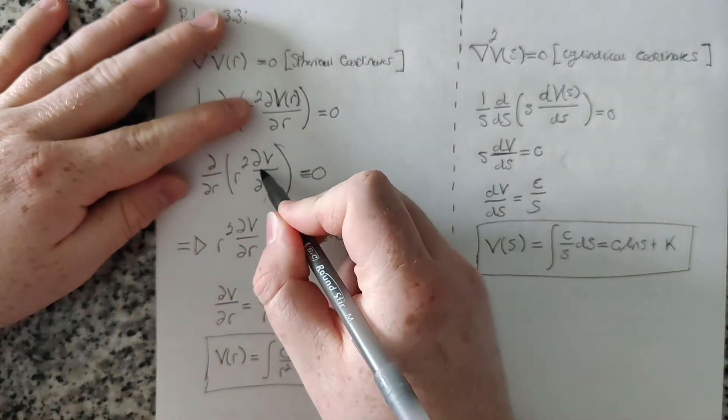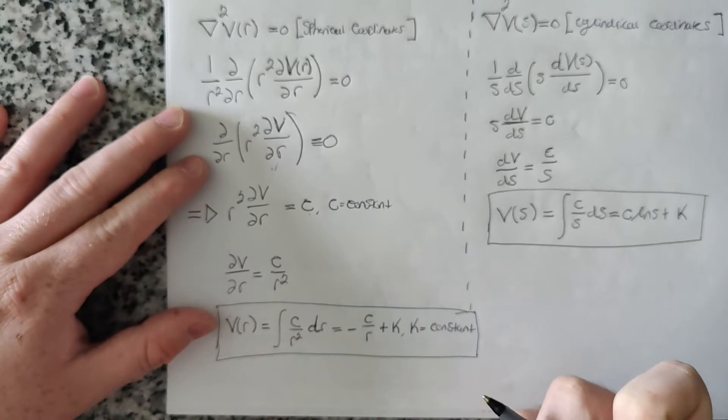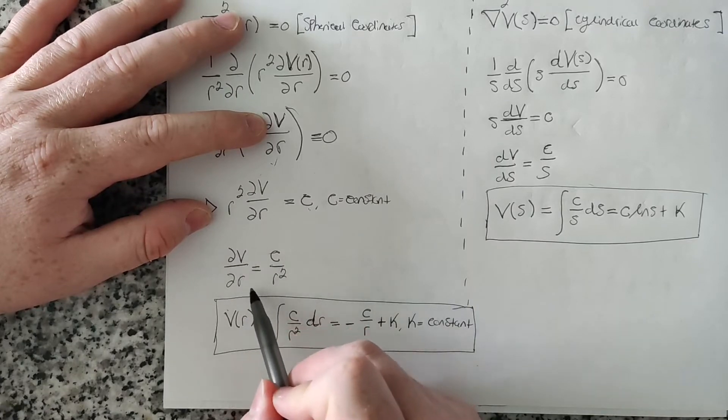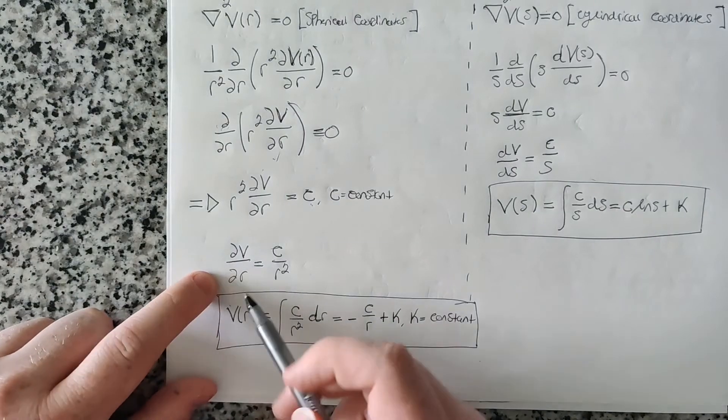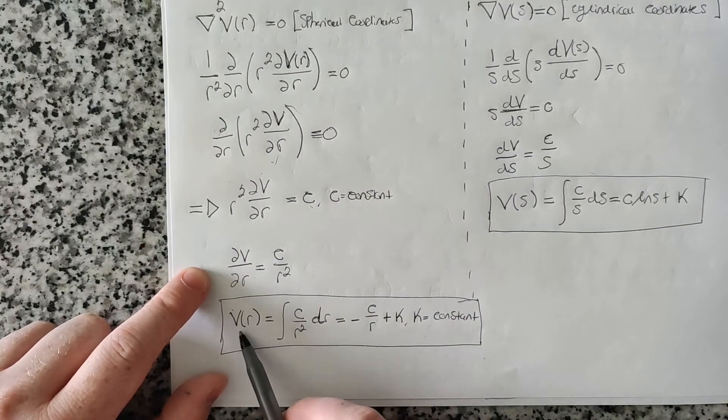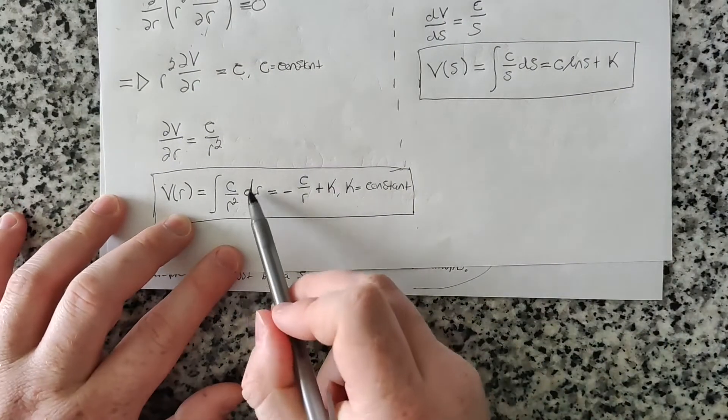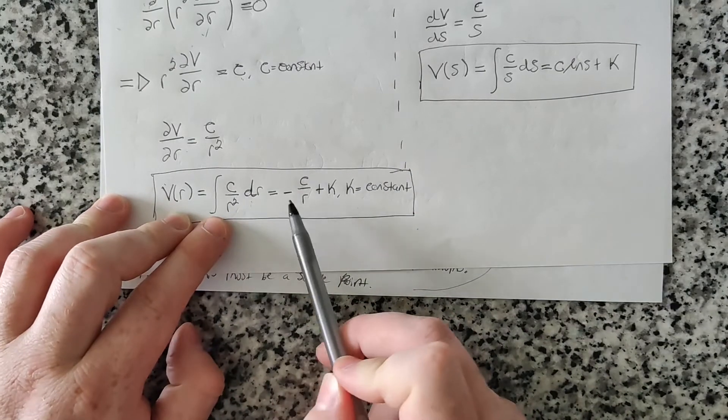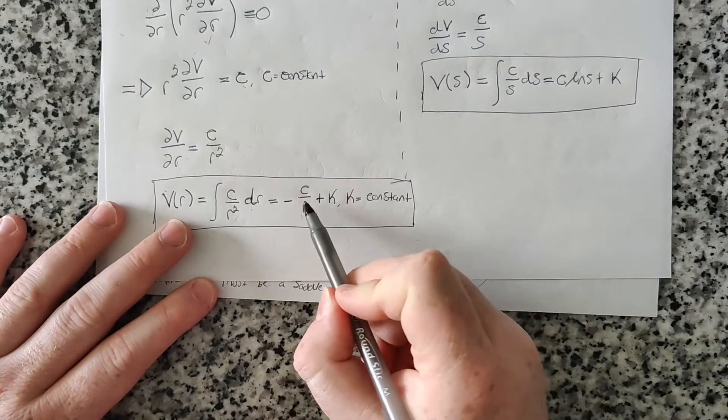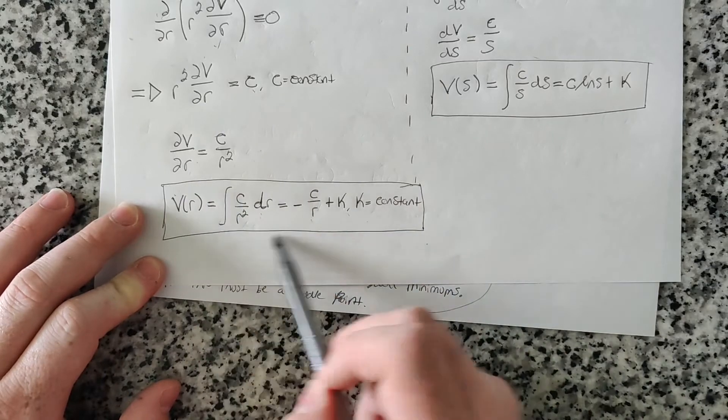So we know that then R squared times the derivative of the potential with respect to R is equal to a constant then, where I've named C the constant. So we know R squared times this is equal to C, and divide by R squared. So the derivative is equal to C over R squared. And then just multiplying by dr on both sides and integrating both sides, you find that the potential V of R is equal to the integral of C over R squared dr, where this integral just evaluates as a very simple integral to minus C over R plus another constant, K, which is also a constant. So C and K are both constants of integration. So this is the general solution to Laplace's equation in spherical coordinates.